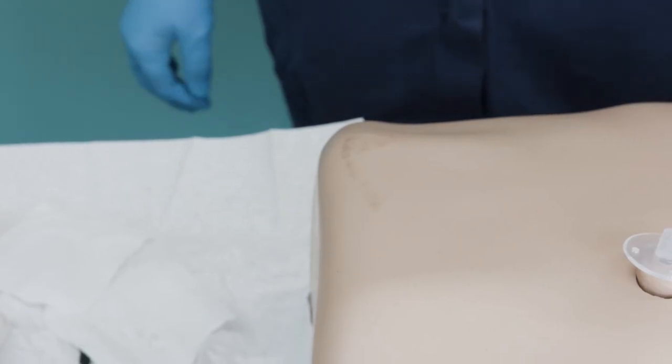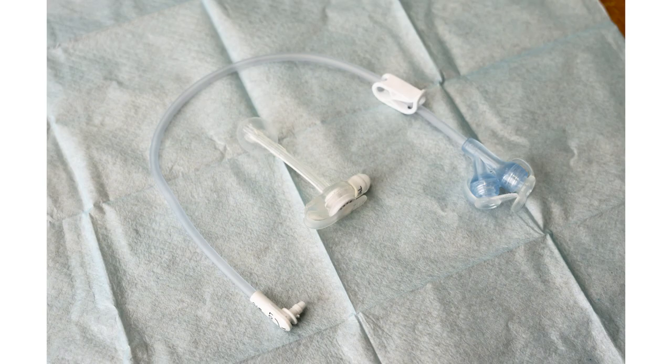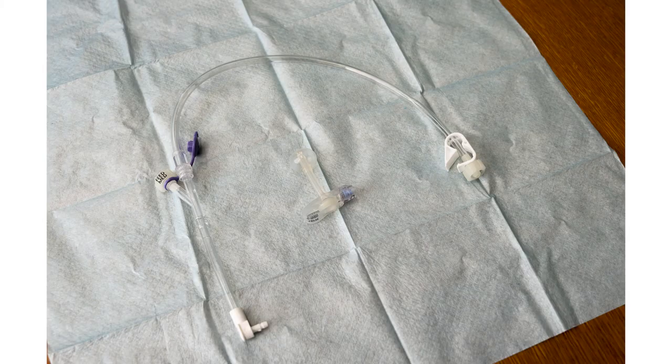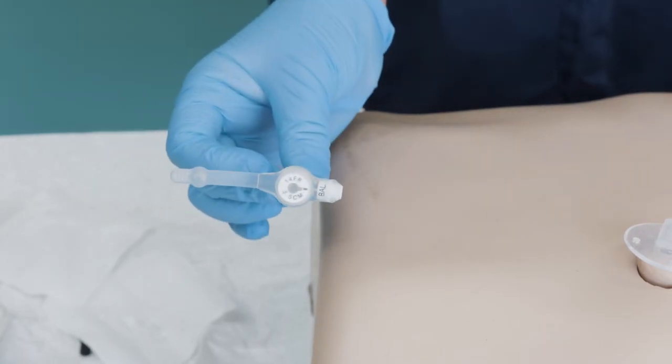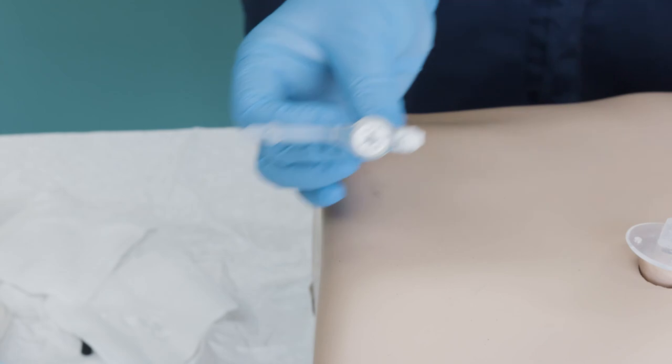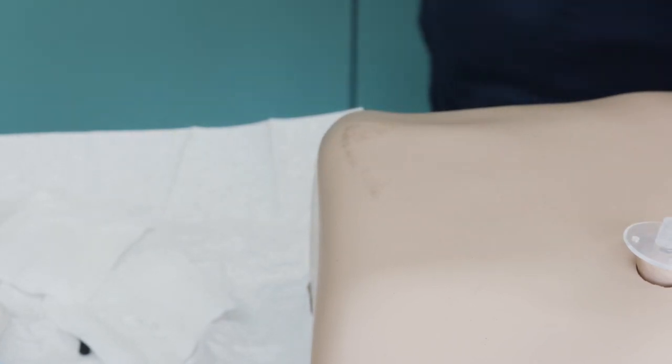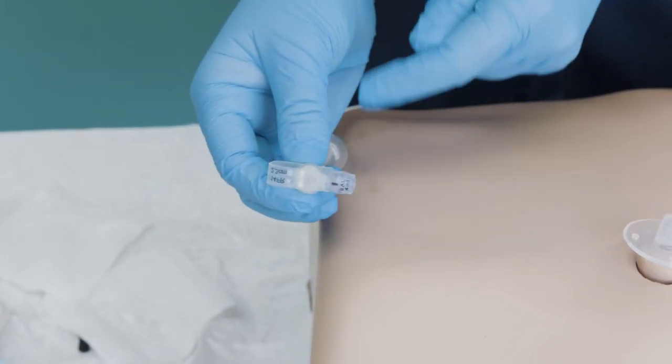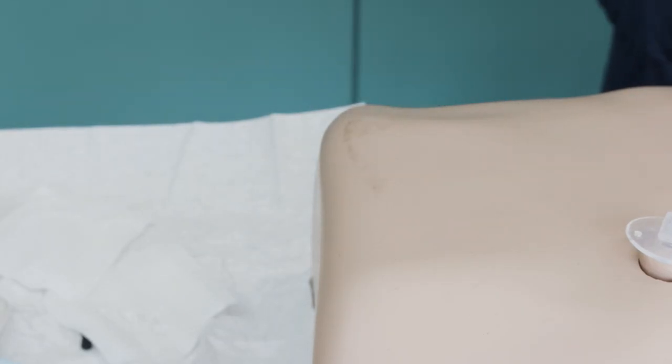If you are replacing a button device, i.e. a mickey or mini button, then the process of replacing the tube is the same. But bear in mind that the balloon valve is on the side of the button, and that you will need an extension set to connect to the button when aspirating the stomach to check the tube position.